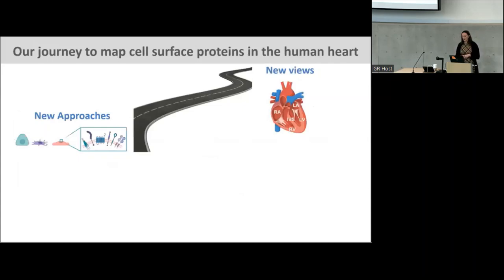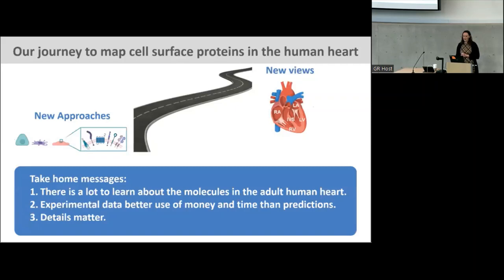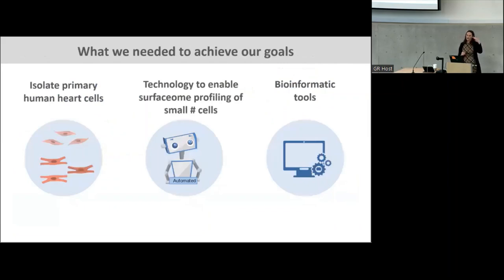Today I'll tell you briefly about our journey to overcome some of these technical challenges and develop a strategy to discover proteins that sit specifically at the surface of the cell in human heart cells. I want you to take home that there's a whole lot yet to learn about the molecules in the human heart. To achieve our goal of knowing what proteins sit on different cell types in the adult human heart and eventually how those change with failure, we had to develop three key technological components: a way to isolate human heart cells from heart tissue, a technology to map the proteins that sit at the surface of the cell, and some bioinformatic tools to analyze the data.